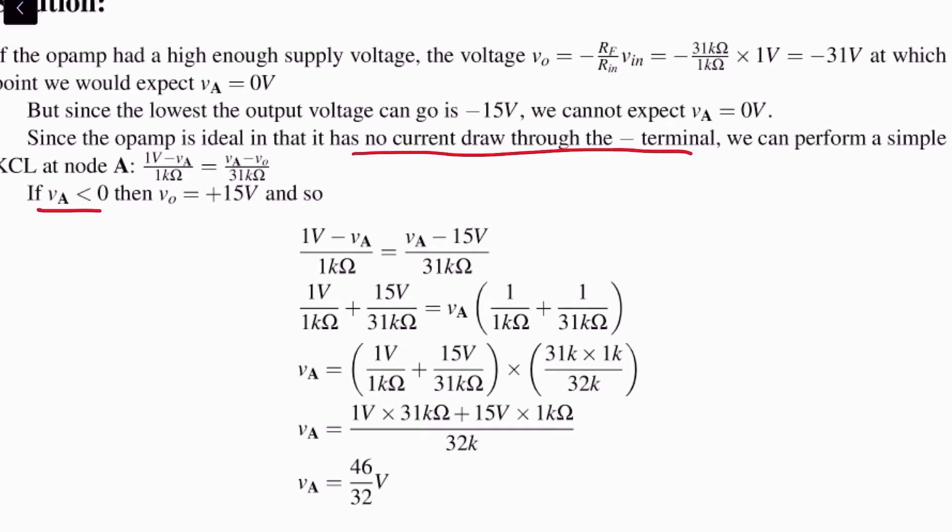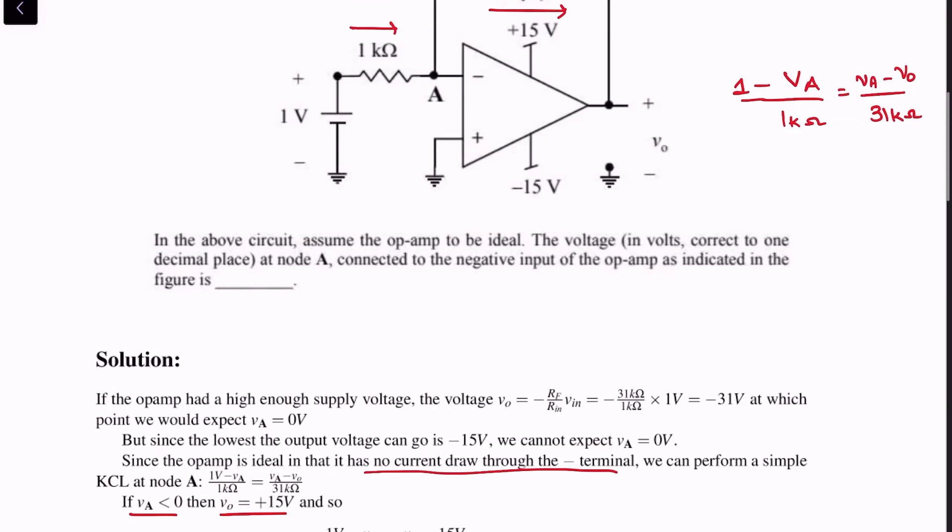If Va is less than 0, then Vout is plus 15 volts. Because if Va is less than 0, that means the delta is actually positive—that is, V plus minus V minus is greater than 0—which means Vout would have to latch all the way up to plus 15 volts.